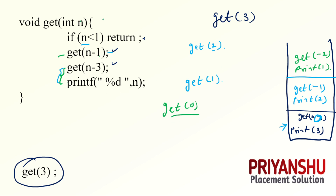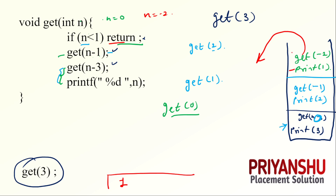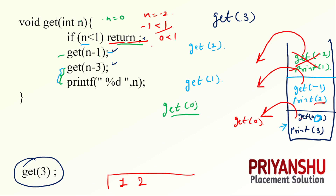get(0) is called: n equals 0, and 0 is less than 1 — condition is true, so return is done. Now we pop elements from the stack. First: get(-2) is called — condition is true, returns — then print 1 executes, so 1 is printed. Next: get(-1) is called — condition is true, returns — then print 2 is printed. Finally: get(0) is called — condition is true, returns — then print 3 is printed. So our final output is 1, 2, 3.